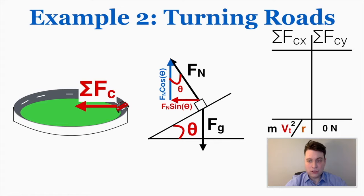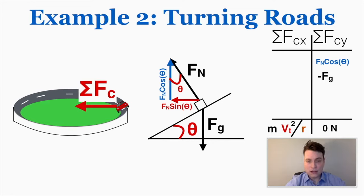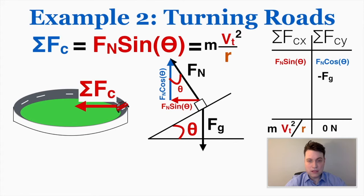In the vertical direction, the normal force times cosine points up and the force of gravity points down, and those two things add together to make zero — because this is a horizontal turn, there's no total vertical force. So normal force times cosine equals the force of gravity. In the x direction, the only thing happening is normal force times sine, which is the centripetal force. So: normal × sine = mv squared over r. That's the key relationship for a banked road with no extra friction.